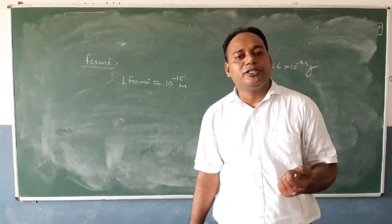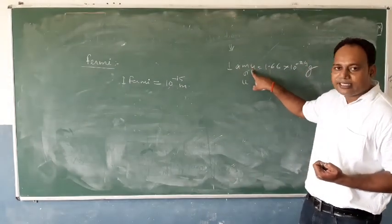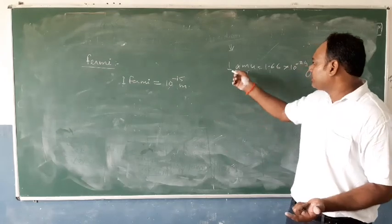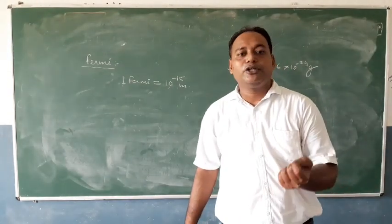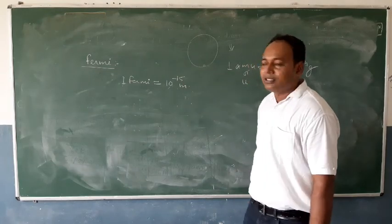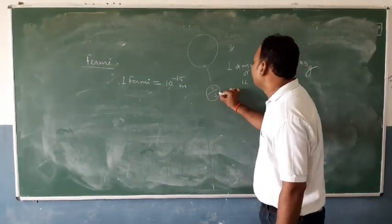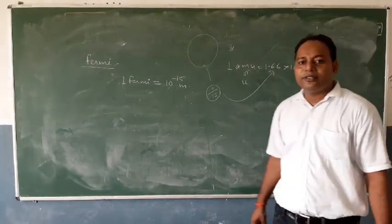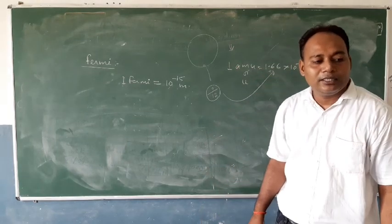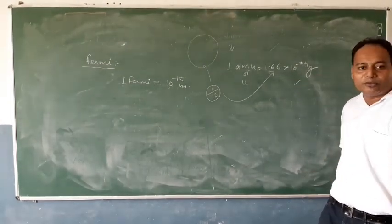The Atomic Mass Unit (AMU or u) is defined as the smallest unit for measuring mass. Its actual definition is: 1 AMU is defined as one-twelfth the mass of one atom of carbon-12. The value of 1 AMU is 1.669 × 10⁻²⁴ grams. This concludes today's video — thank you.